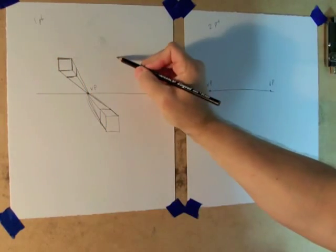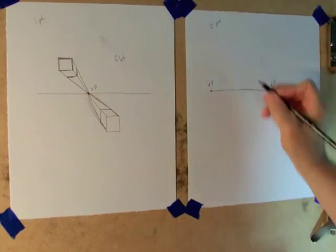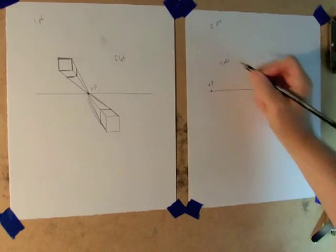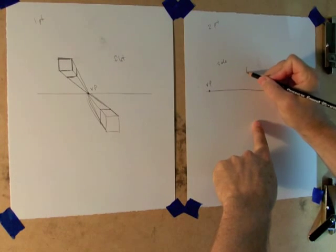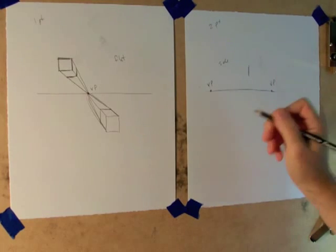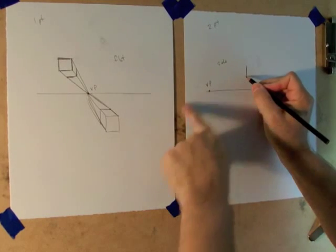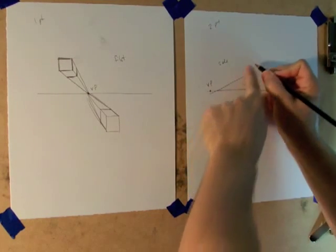Now the difference between the one point and two point perspective in regards to the orientation of the box. One point, the flat side is facing you, the viewer. Two point perspective, the edge is facing you, the viewer. So on two point, establish the edge first.